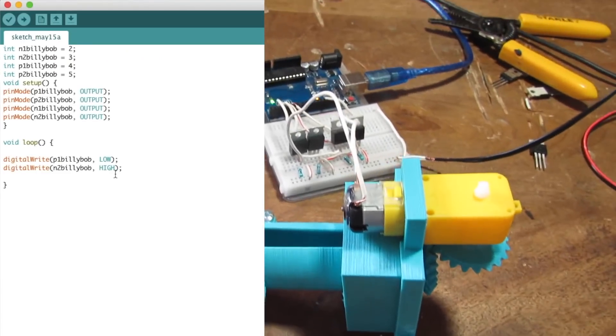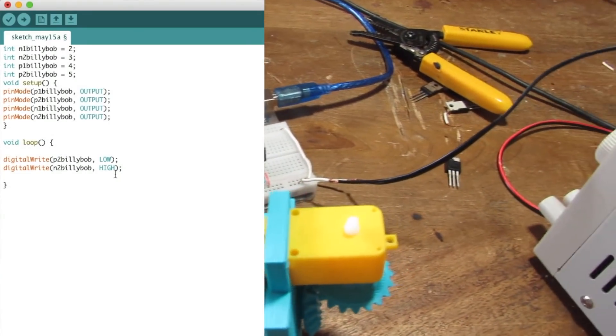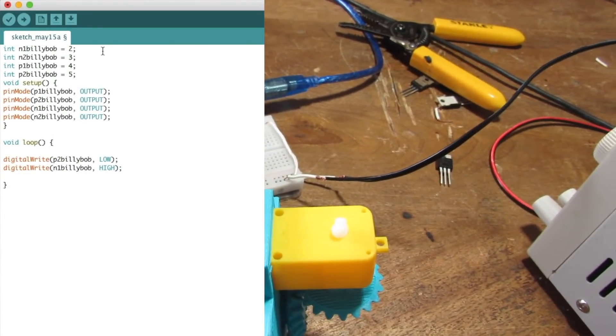It fell out and now I'm going to spin it counterclockwise so I'm going to change to P2 and N1.